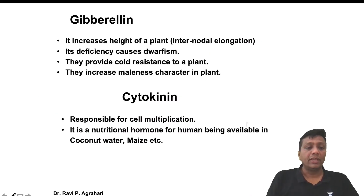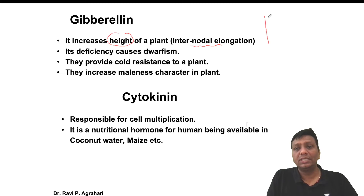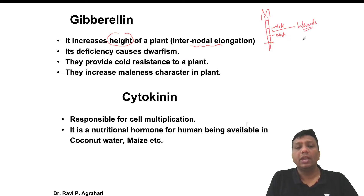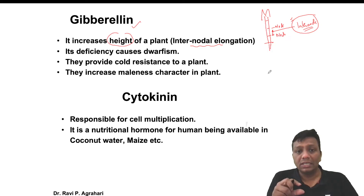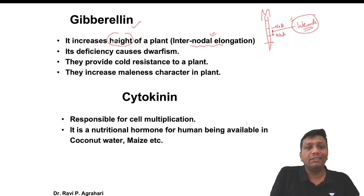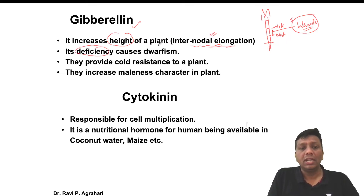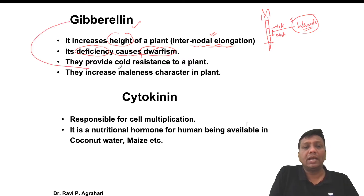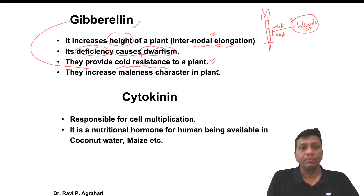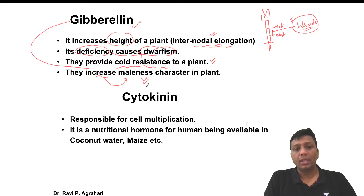The second hormone is gibberellin. Gibberellin is responsible for increasing the height of the plant, especially for internodal elongation. A stem has nodes, and the gap in between is called the internode. Gibberellin increases this internodal length, and thus the plant height increases. If there is a deficiency of gibberellin, the plant suffers from dwarfism. Gibberellin also protects plants against cold resistance. While auxin increases femaleness character, gibberellin is responsible for increasing the male flower character in the plant body.